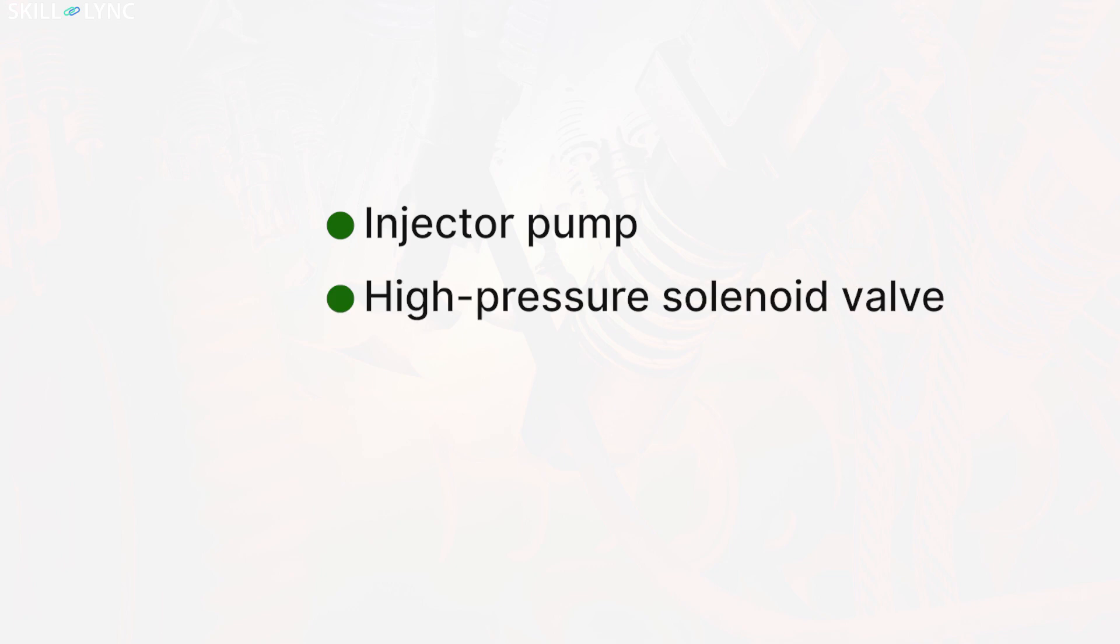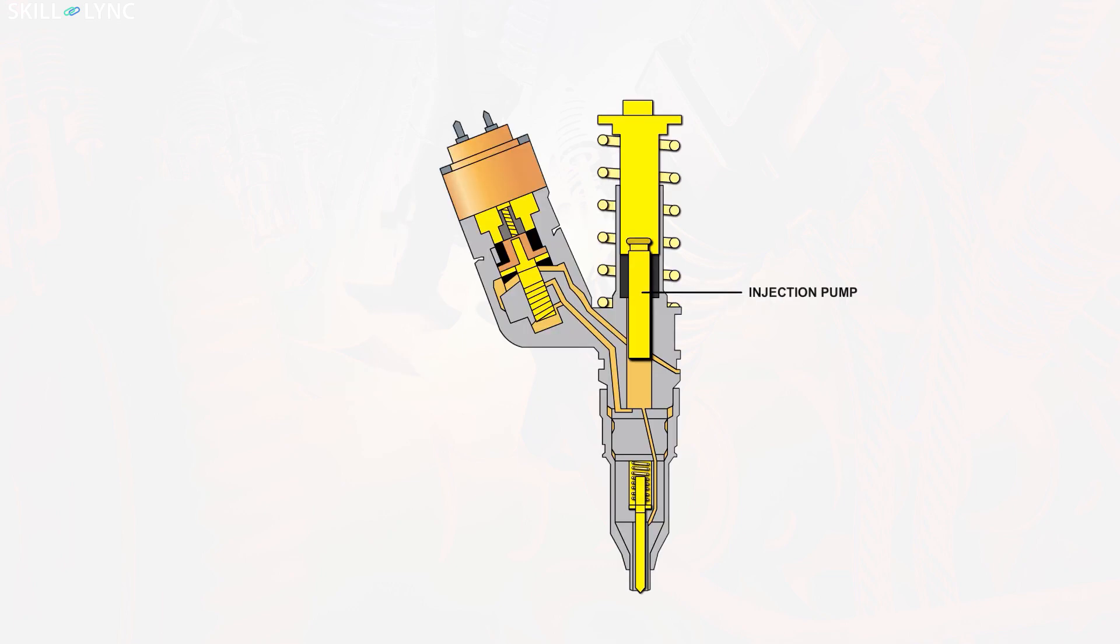In vehicles which use unit injector systems, each cylinder is provided with an individual unit injector which is placed over the cylinder head. An electronically controlled unit injector consists of an injector pump, high pressure solenoid valve, and an injection nozzle.